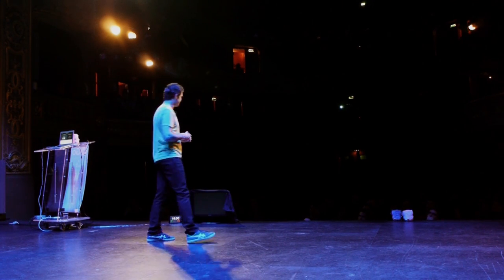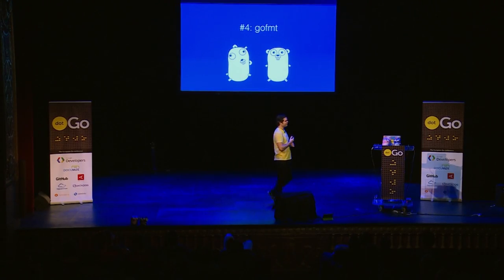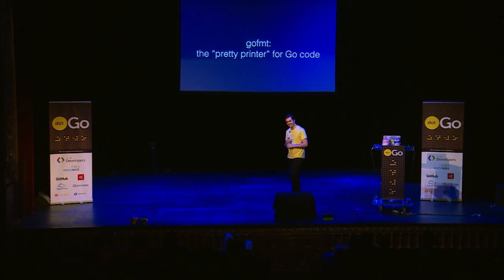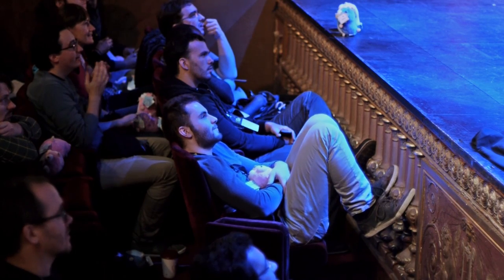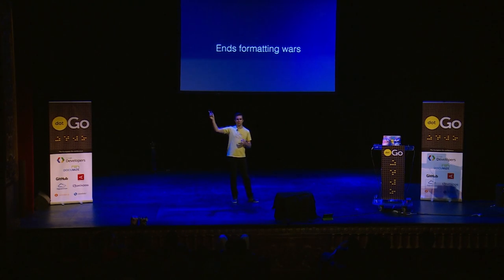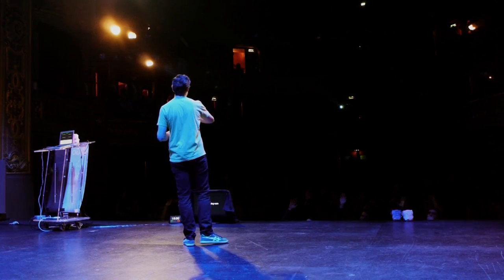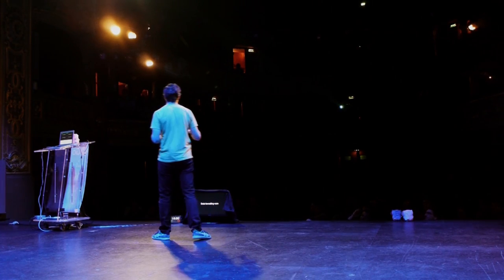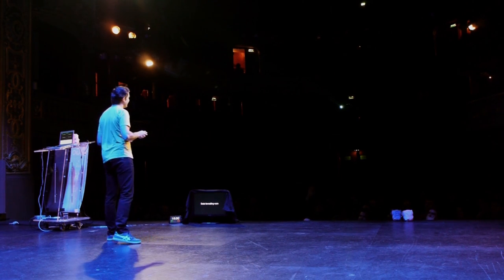That's really just the tip of the iceberg in terms of the tooling that workspaces enable. The fourth thing I love is gofmt. Gofmt is the pretty printer for Go source code — it takes code that looks like this and turns it into that. Why do I love gofmt? It ends formatting wars. Raise your hand if you've ever had an argument with a colleague about the position of a brace or a semicolon — and for the video, every single person in the audience is raising their hand right now.